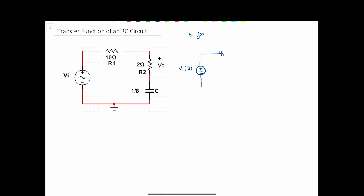We know that the impedance of the resistor will be the same as the resistor. So ZR is equal to R. This will be 10 ohms, and this will be 2 ohms.